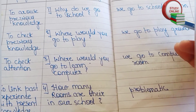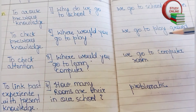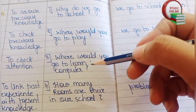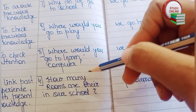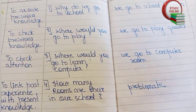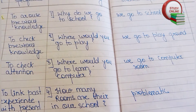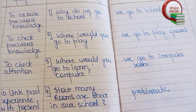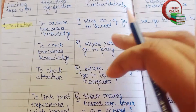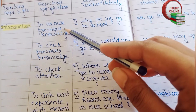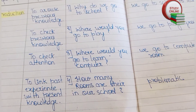First we ask: 'Why do we go to school?' — students answer: to learn. 'Where would you go to play?' — students answer: the playground. 'Where would you go to learn computer?' — students answer: the computer room. 'How many rooms are there in our school?' — this is problematic for younger students like class one and two, as they may not be able to name all the rooms.